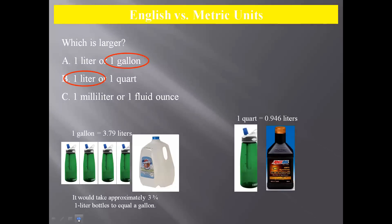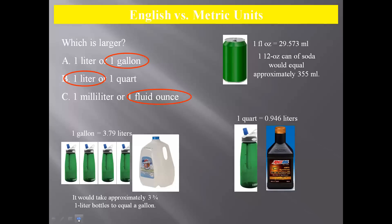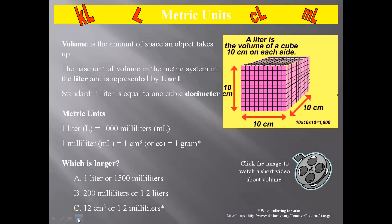A liter is slightly larger than the English quart. And let's look at milliliter and a fluid ounce. A fluid ounce is bigger than a milliliter. So one fluid ounce is approximately 29.5 milliliters.